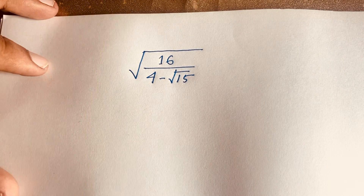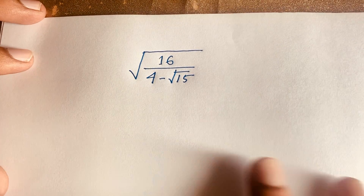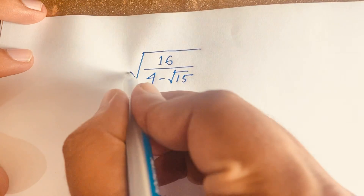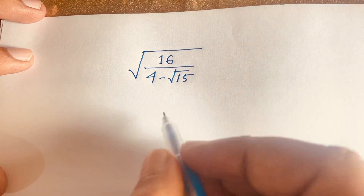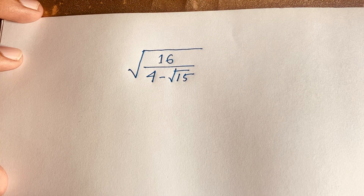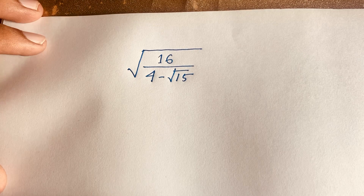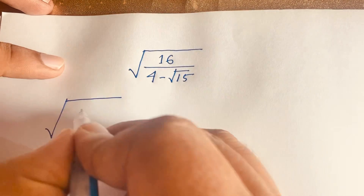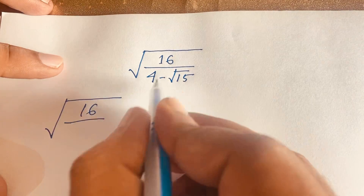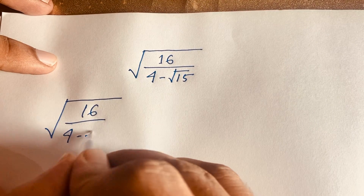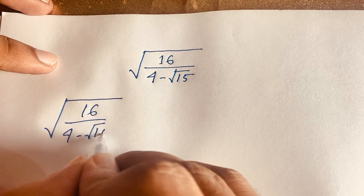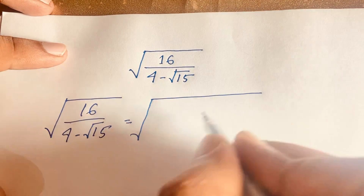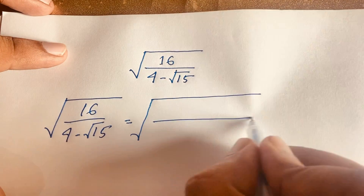Hello everyone. In this video we solve this radical math question: square root of 16 over 4 minus square root 15. So our question is square root of 16 over 4 minus square root 15.